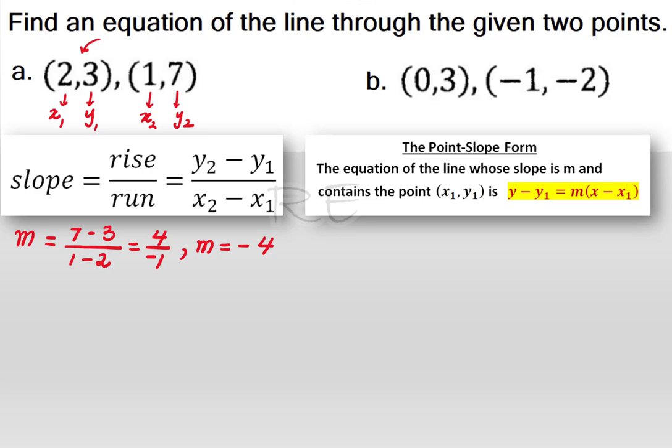Now, using the point-slope form, we're going to choose (2,3) as a point, and negative 4 will be the slope. So, we'll get y minus 3 is equal to m, negative 4, times x minus 2.